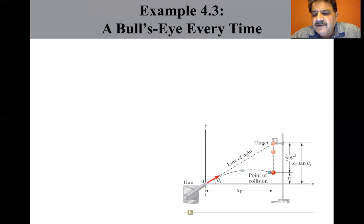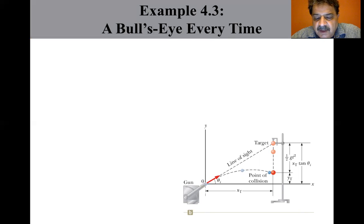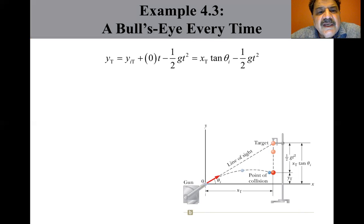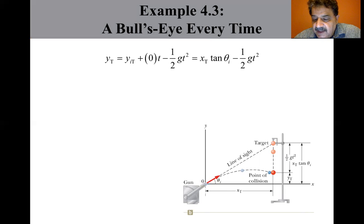Let's analyze. The figure shows that the initial Y coordinate of the target is X-T times tangent theta, and its initial velocity is zero. It falls with acceleration A-Y equal to minus G, minus 9.8 meters per second squared. We write an expression for the Y coordinate of the target at any moment after release: Y-T equals Y-initial-T plus zero times T minus one-half G-T-squared, which equals X-T times tangent theta-I minus one-half G-T-squared.